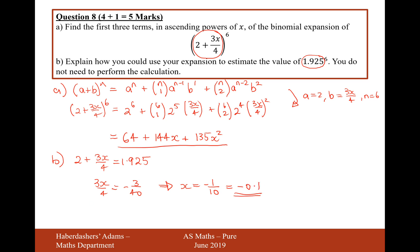So there we are. So how do you do this? You substitute x equals minus 0.1 into the binomial expansion.